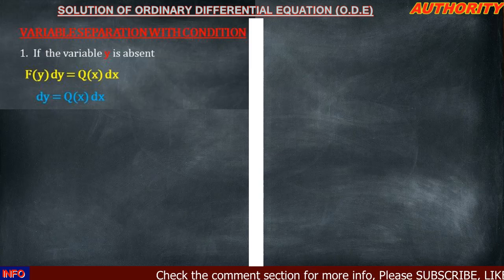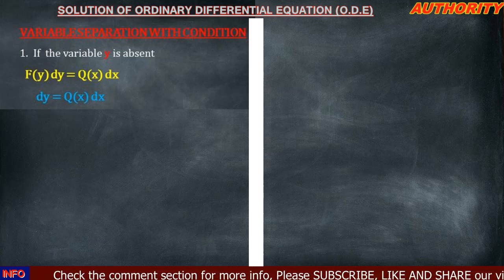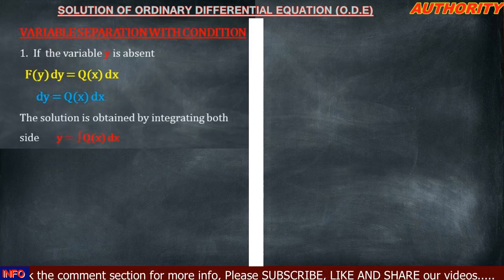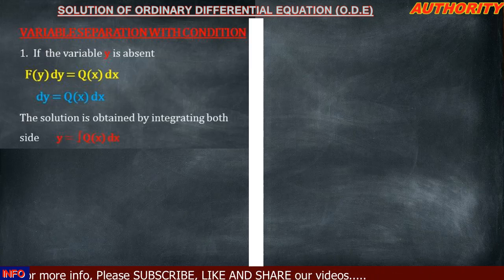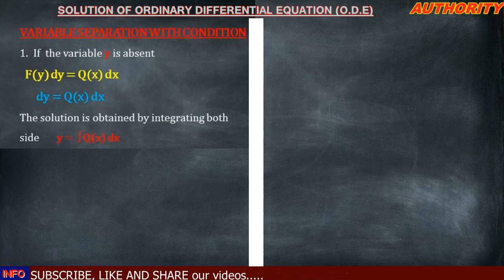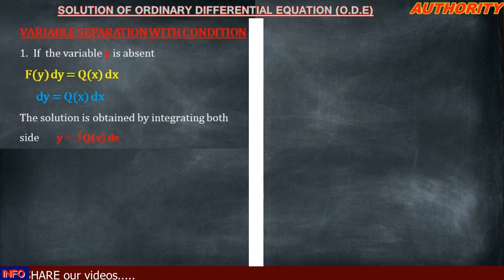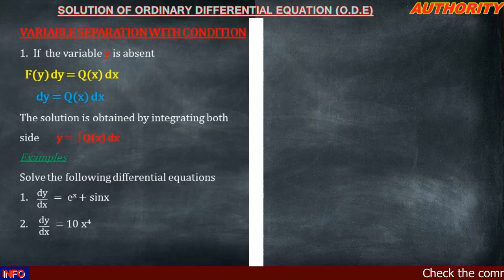Where y is absent, we write dy equal to q(x) dx. The solution is obtained by integrating both sides, giving us y equal to the integral of q(x) dx. Now let's take a look at some examples to understand exactly what I'm talking about. Solve the following differential equations.